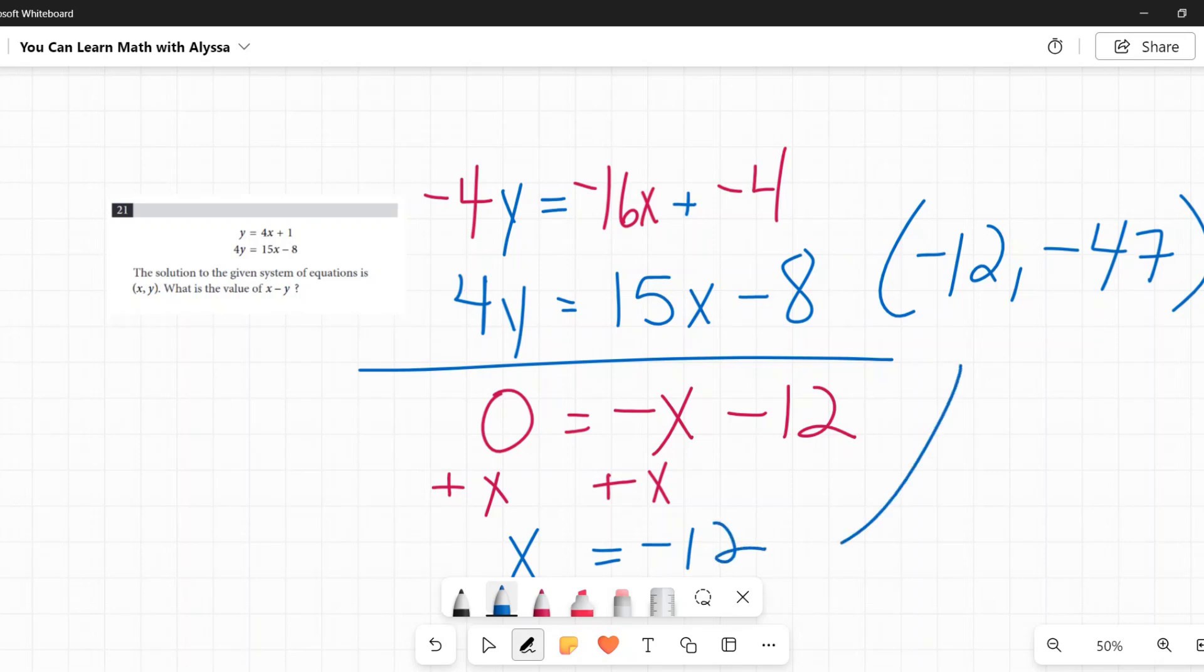So here we are back again, like we said up there. x is negative 12. In the same process, I would take negative 12 and plug it into that original y equals 4x plus 1, which would give me negative 47. And we're back to x minus y, negative 12 minus a negative 47, which is a positive 35.